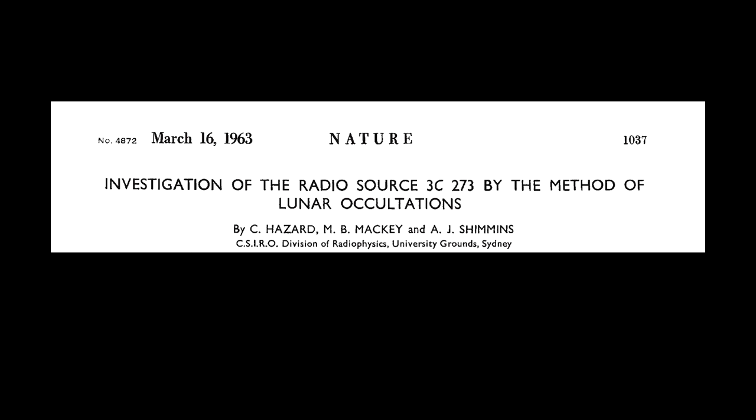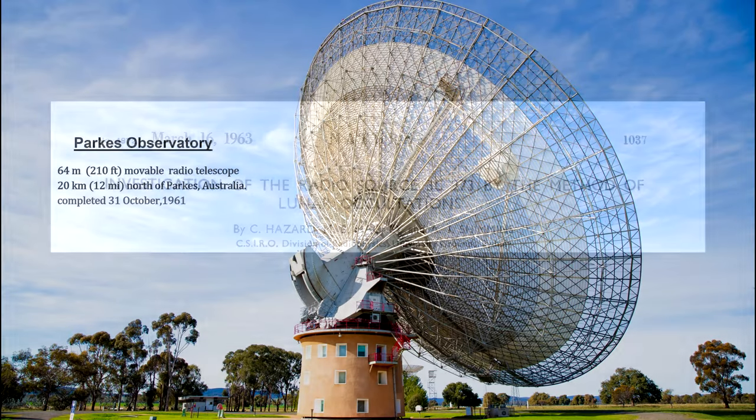three astronomers, C. Hazard, M.B. Mackey, and A.J. Simmons, published a paper in Nature describing what they found in 1962, using lunar occultations with the Parkes Radio Telescope in Australia to study the intense radio source 3C273.